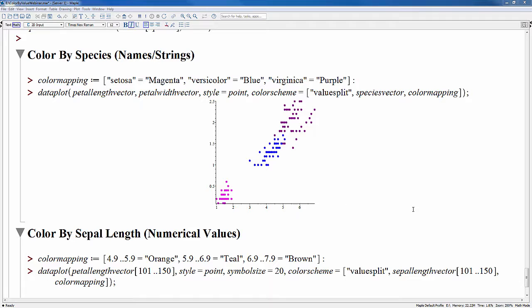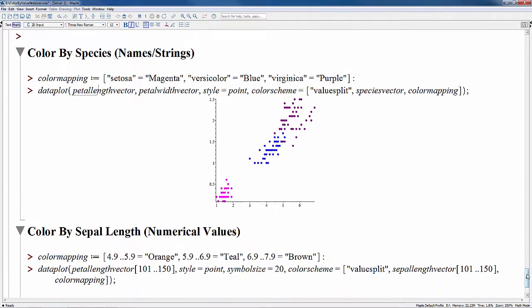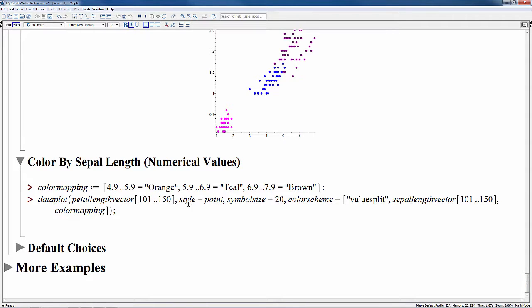This next example shows how to color by ranges of numerical values. Here we want to plot the petal lengths for a single species. So I'm using only 50 sample points here. These are the ones for the virginica species. And I'll just plot them against the sample number. We also want to color according to the sepal length. So this is first done using the mapping shown here. So notice that the left hand side of each equation is now a range of values. This can also be a single value.